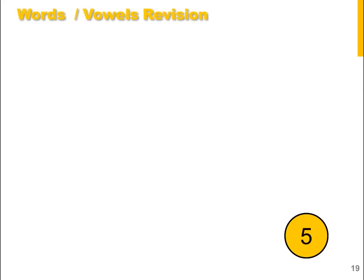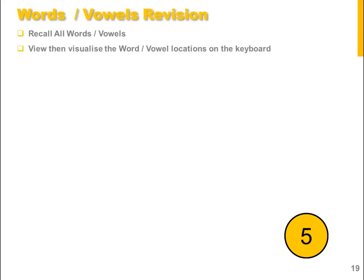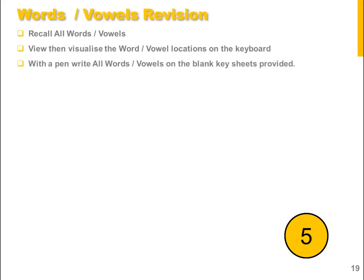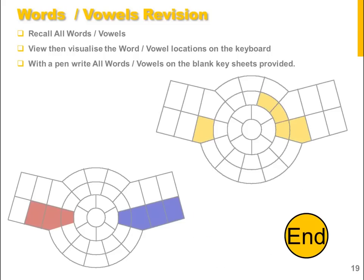Now let's look at the words and vowels revision. Again, we will recall the words and vowels, view and visualize their location on the keyboard. At this point, pause the video once again and, using the blank keyboard diagram provided, see if you can fill in each of the words and vowels represented here by each of the highlighted areas.